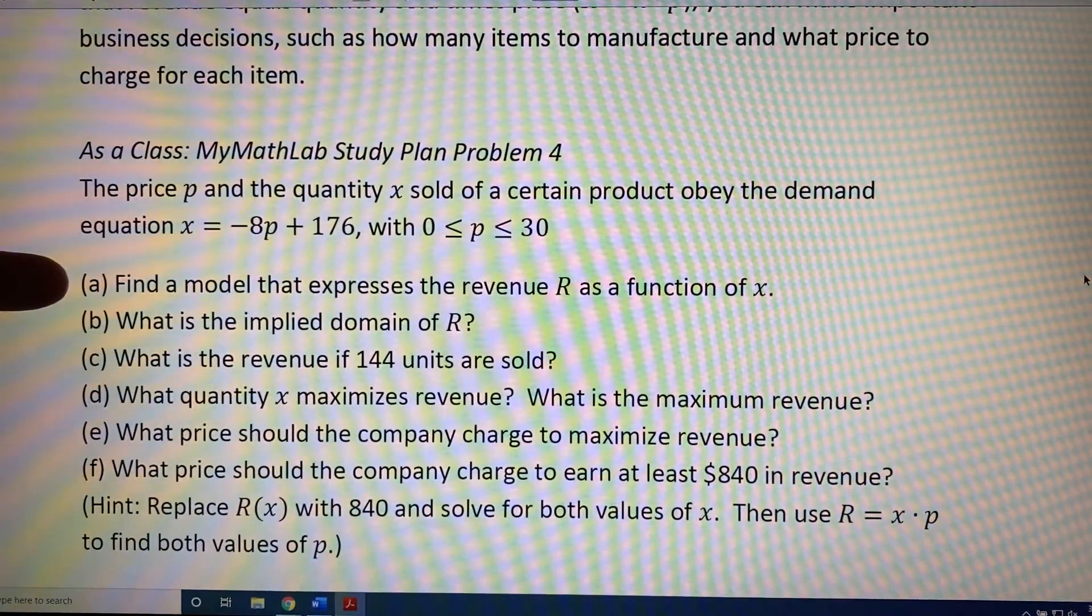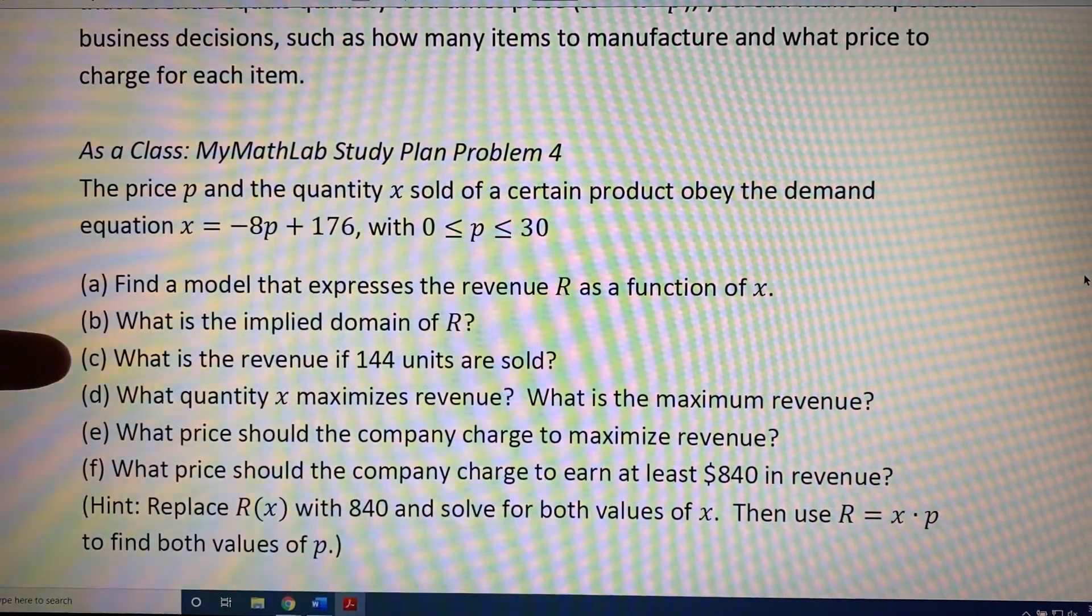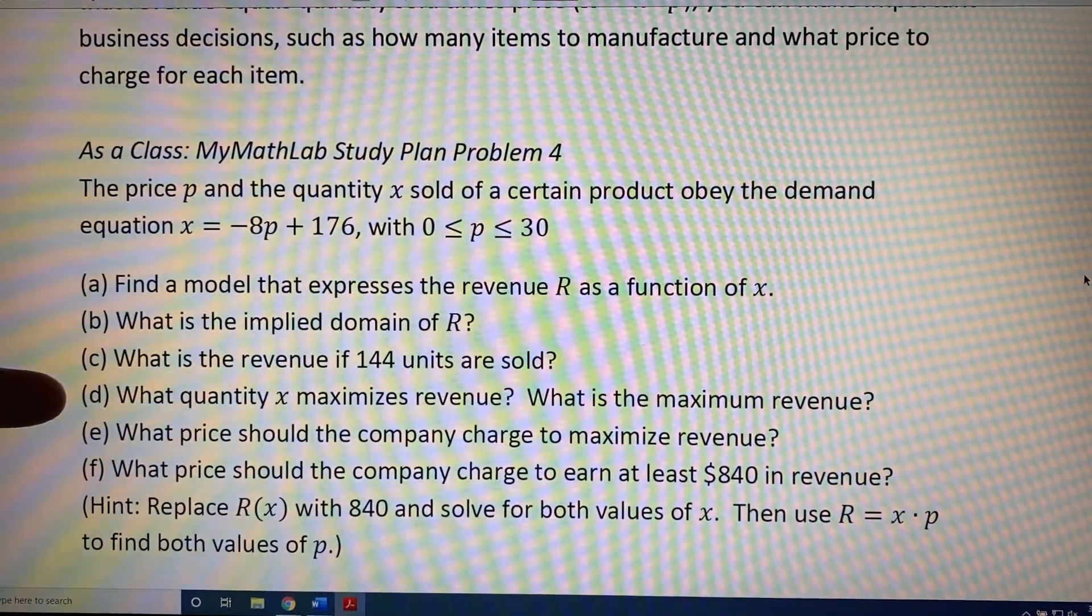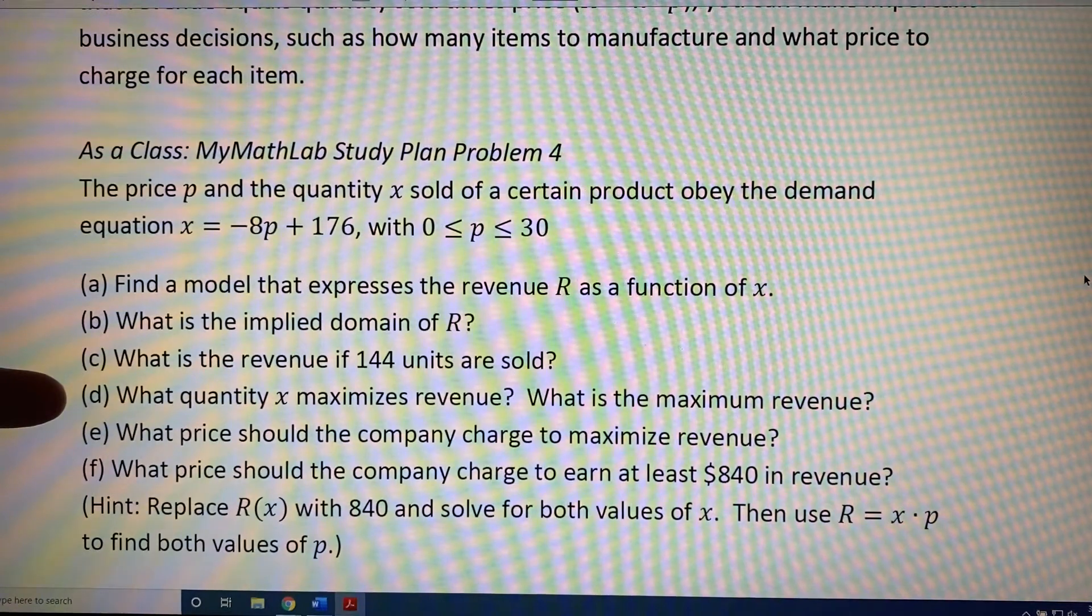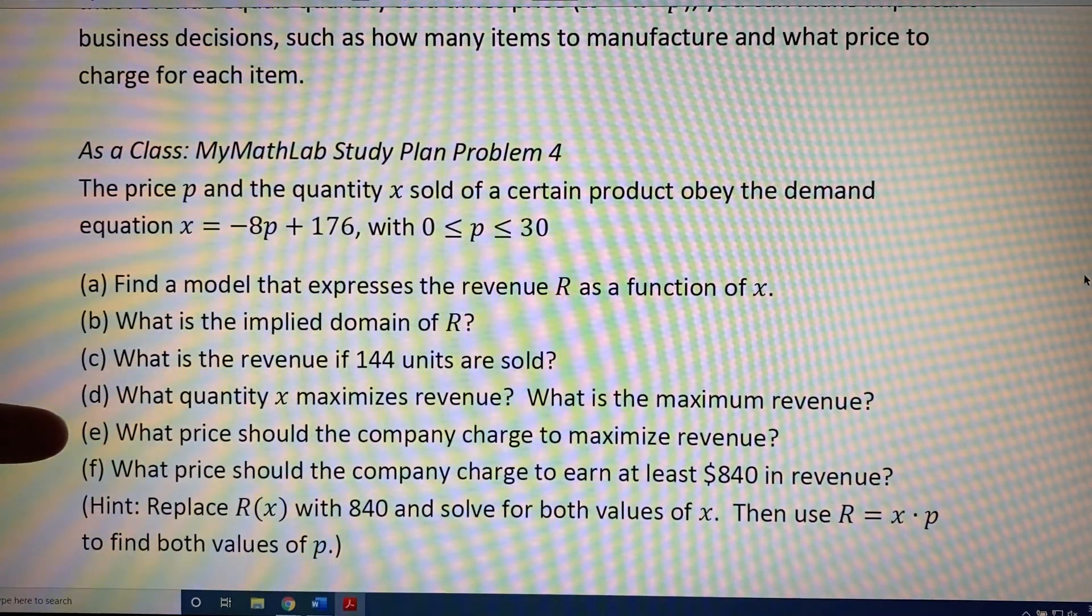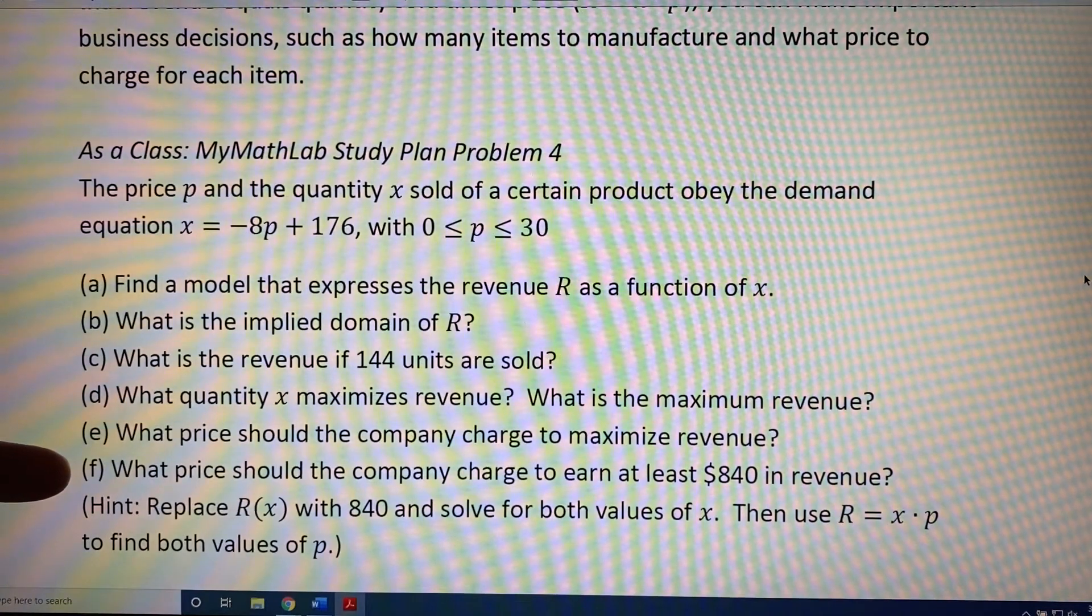Find a model that expresses R as a function of x. Find the implied domain of R. Find the revenue if 144 units are sold. Find x that maximizes the revenue as well as the maximum revenue itself. Find the price to charge to bring in the maximum revenue. And finally, find the range of prices to charge to bring in at least $840 in revenue.